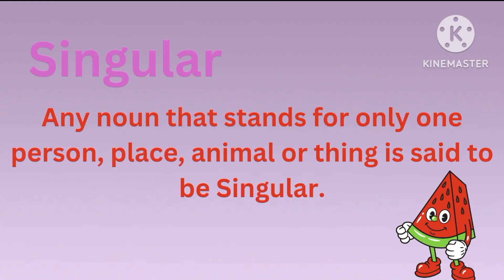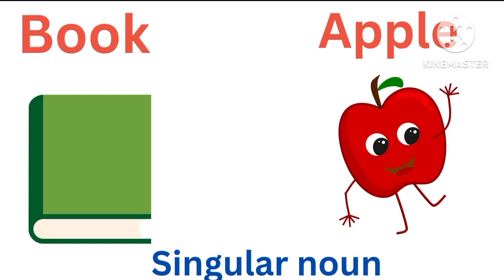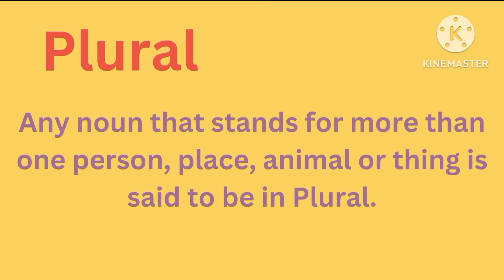Singular: Any noun that stands for only one person, animal, place or thing is said to be in the singular number. For example, book and apple — both are one in number, so they are considered singular nouns. Similarly, banana and house are singular nouns because they are one in number.